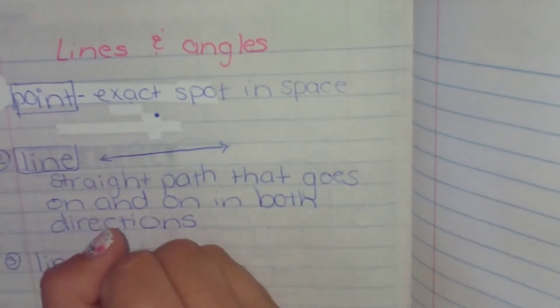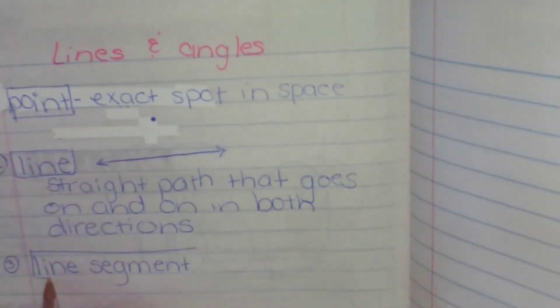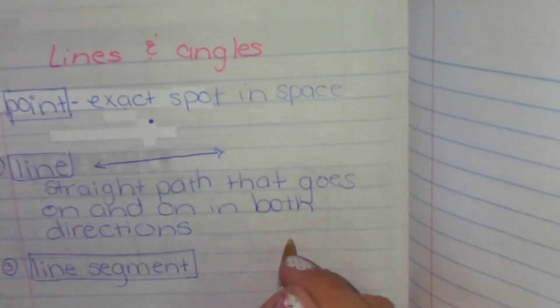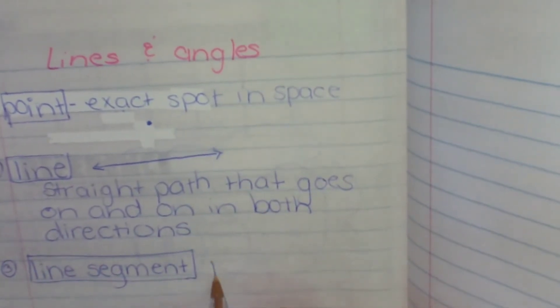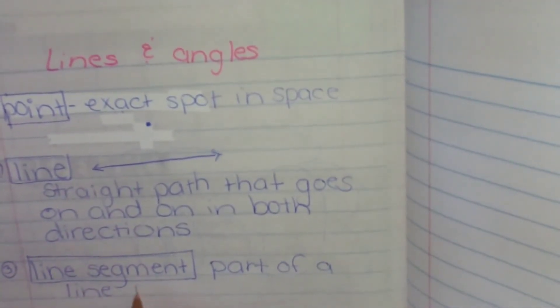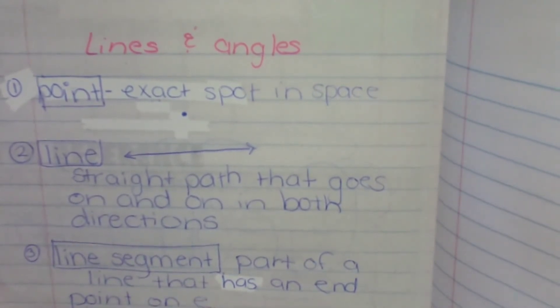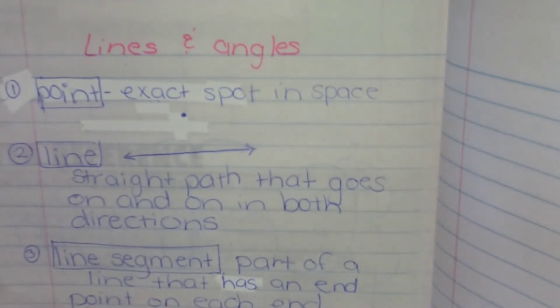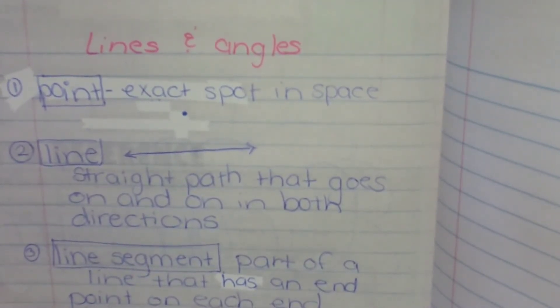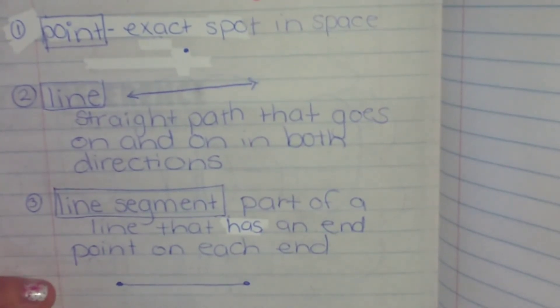Now what about the lines that stop? They are called a line segment. Segment means a piece of. So a line segment is a piece of a line. It has an end point on each end. So for drawing, it looks like that. So our line that we walk in for school is a line segment. A line that we draw for the side of a shape is a line segment.